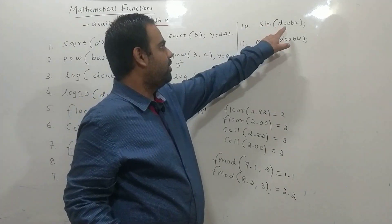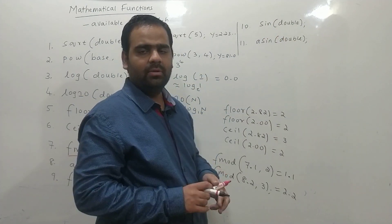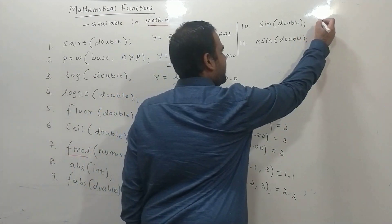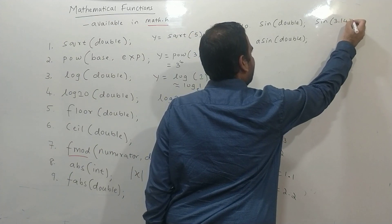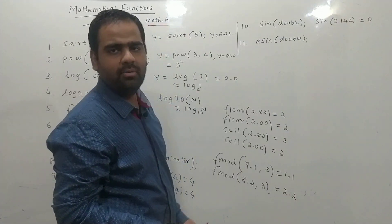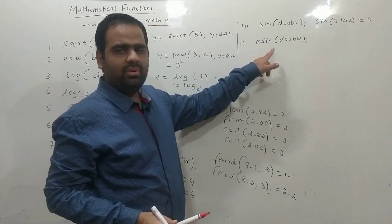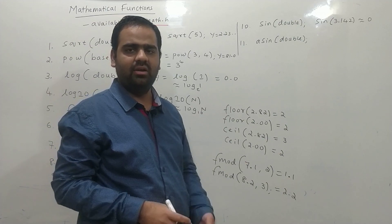Next, we have sine of double. This sine takes the value in radians. It means if you write sine of pi, that is 3.142, it will give you approximately answer as 0. Sine pi is 0. Asin means sine inverse. Similarly, we have cos, acos, tan, atan.